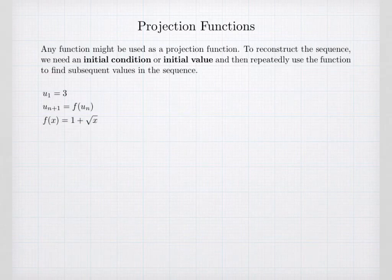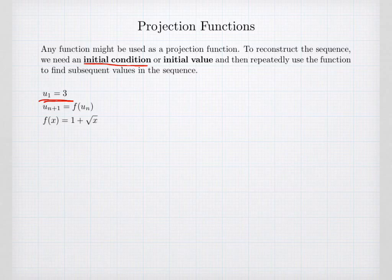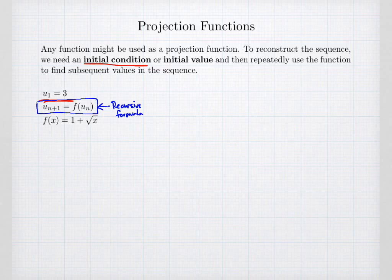In principle, any function can be used as a projection function. In this example, f(x) = 1 plus the square root of x. To reconstruct a sequence, we need an initial condition corresponding to the first value. We then repeatedly apply the function to find subsequent values, giving the recursive formula: the next value u_{n+1} equals f(u_n), which is 1 plus the square root of u_n.